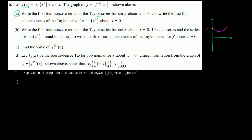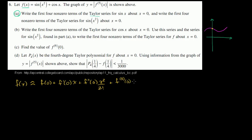So if I have f of x, I can approximate it with this Taylor series. Centered around 0, it equals f of 0, plus f prime of 0 times x, plus the second derivative at 0 times x squared over 2 factorial, plus the third derivative of f at 0 times x to the third over 3 factorial, plus the fourth derivative at 0 times x to the fourth divided by 4 factorial, and so on and so forth.